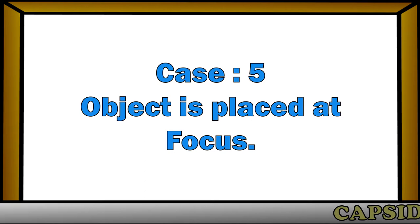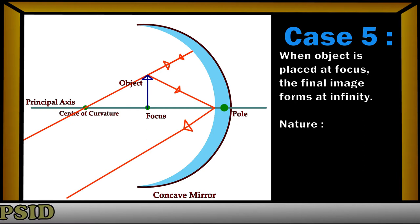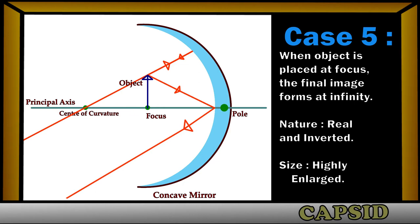Case 5: the object is placed at the focus. When the object is placed at the focus, the rays coming from the object never meet at any point after reflection through the concave mirror. So the final image forms at infinity. The size of the image will be highly enlarged, and the nature of the image will be real and inverted.